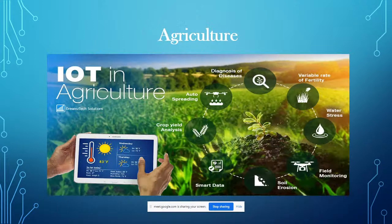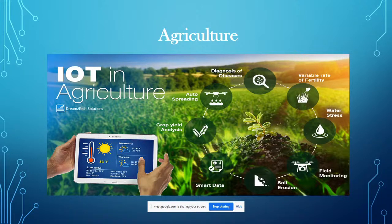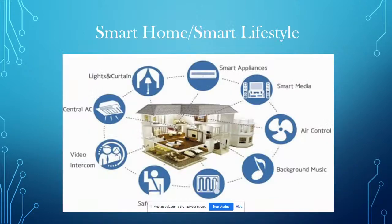Agriculture IoT: monitoring soil moisture level, humidity level, and temperature level depending on the crop. If the soil moisture content is very low, a message is sent to the authorized person via WhatsApp or email. It is also possible to control a pump from any location — turning it on or off automatically.